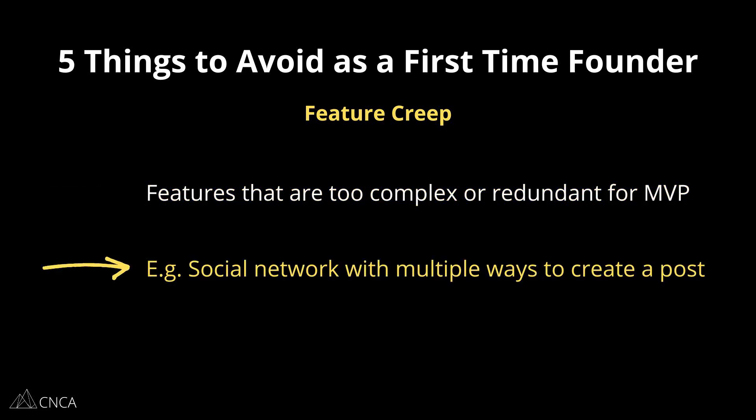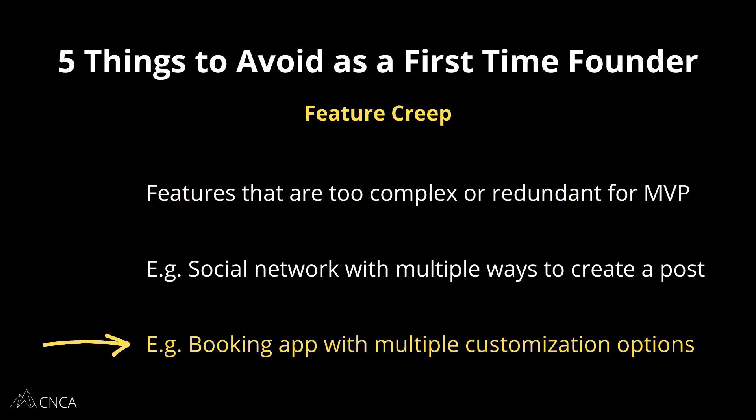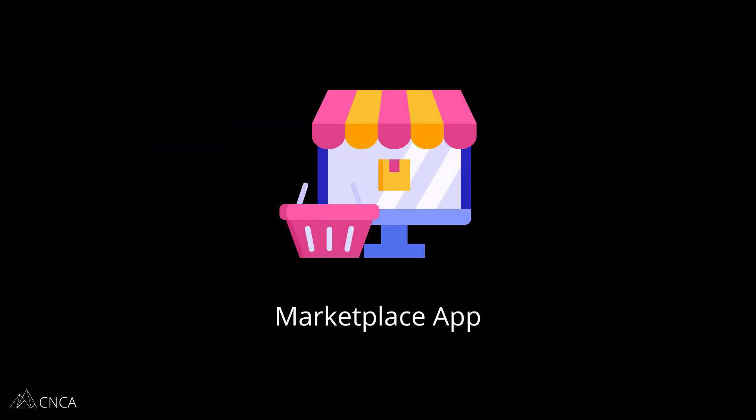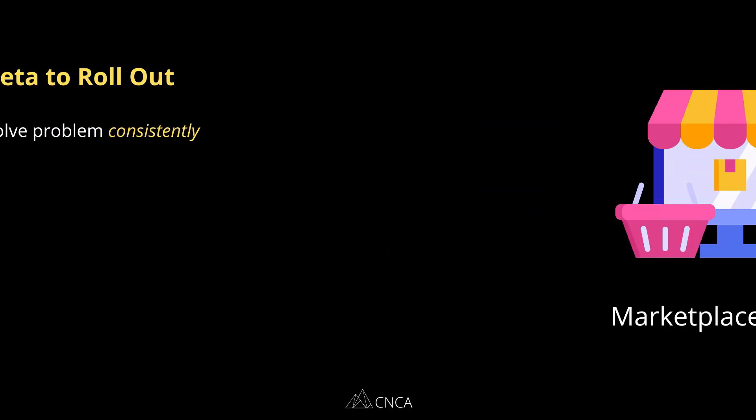For example, a social network doesn't need 10 different ways to create a post. A booking application doesn't need 10 different custom booking options. An MVP solves a core problem. Let's use a marketplace as an example where service providers are getting connected to consumers. From beta to rollout, the MVP should be solving that problem consistently.